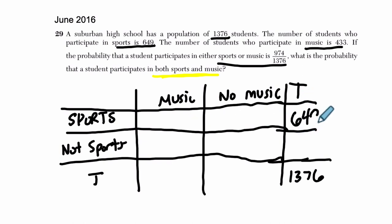So altogether there are 649 students who play sports. And then there are 433 students who play music. So I'm setting up my table. I know there's lots of blanks here, but I can fill these two spaces in. This space right here will have to equal the difference of 1,376 and 433.